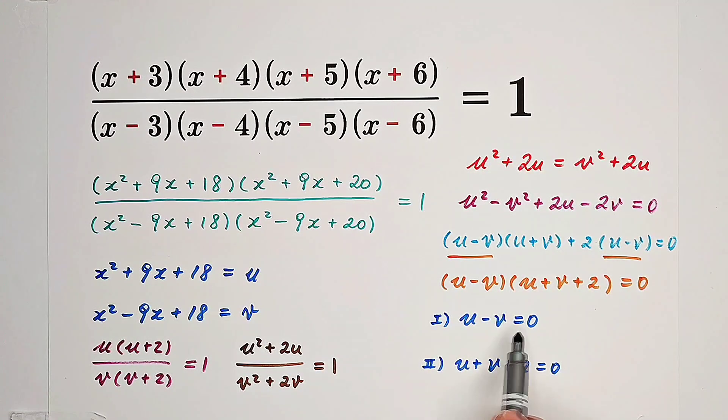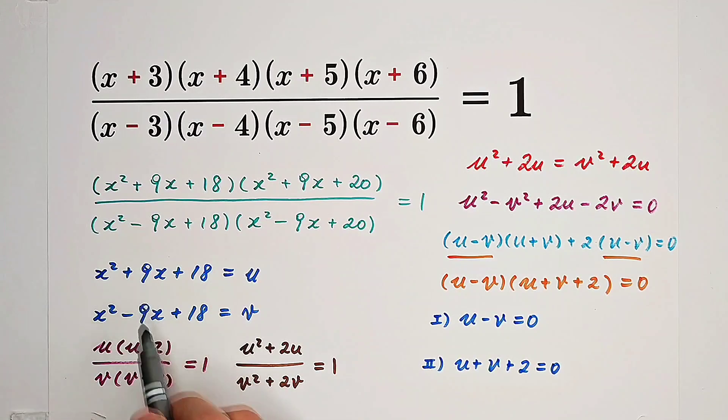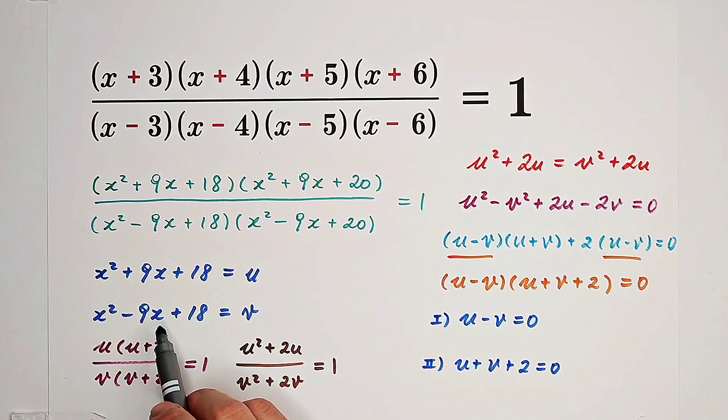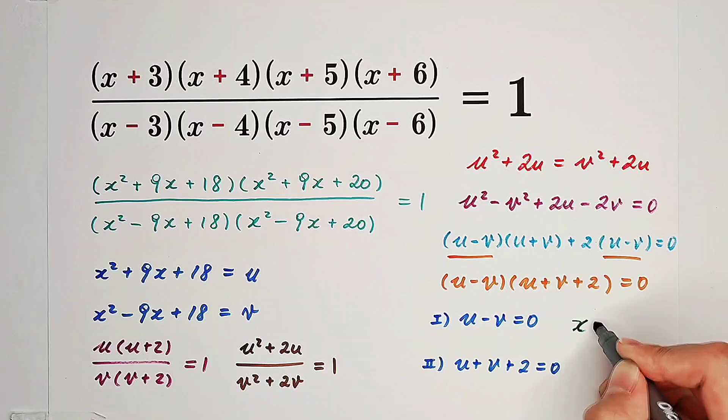In our first case, u minus v is going to be 18x, and 18x equals 0, so x is 0.